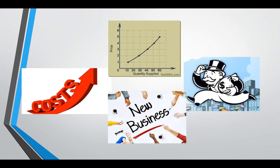The second reason is increasing costs. Usually when you start producing, you use the most available resources first. Think of it this way: if you're a farmer and you want to farm, you start with the land made just for that purpose. If you want to increase the amount you farm, it's going to cost you more money. The only way you'll make more available for sale is if you can cover those costs, which means you'll have to charge more for the product.